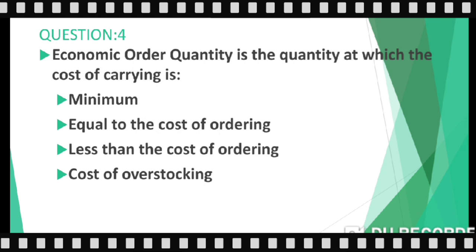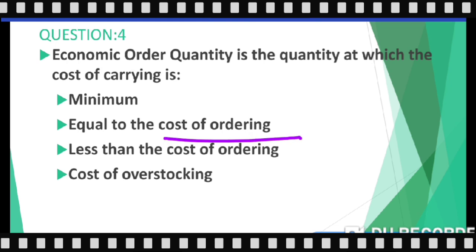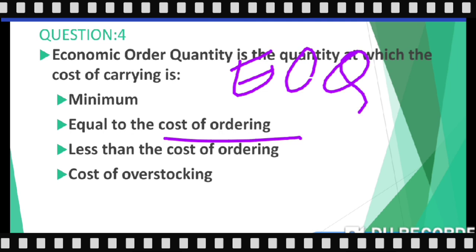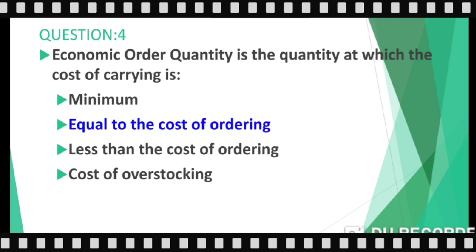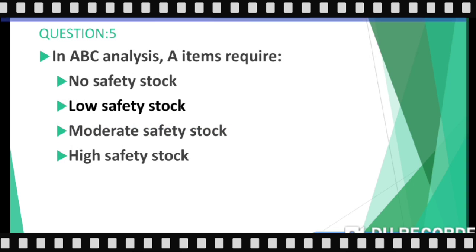Question four: Economic Order Quantity is the quantity at which the cost of carrying equals the cost of ordering. At EOQ, both costs are equal — cost of carrying is equal to cost of ordering. That is the point at which EOQ is defined.